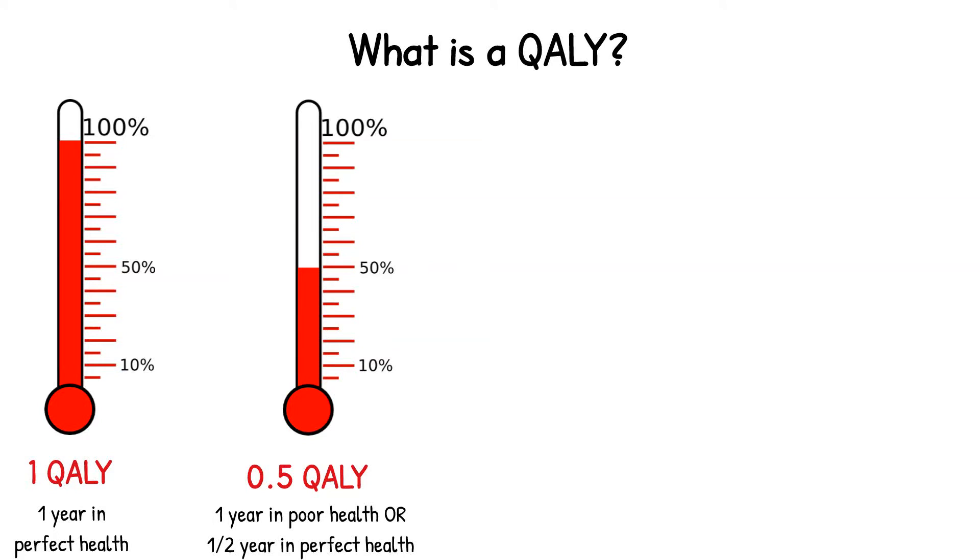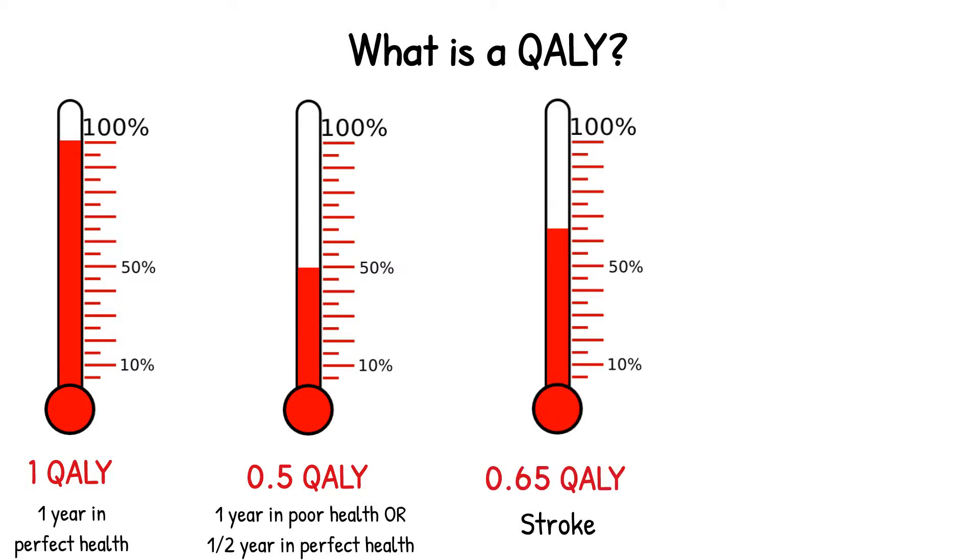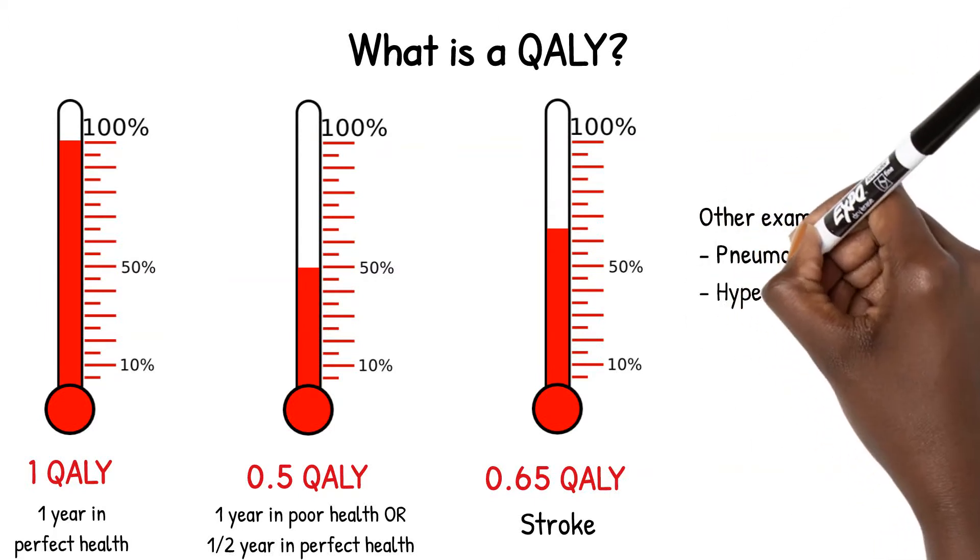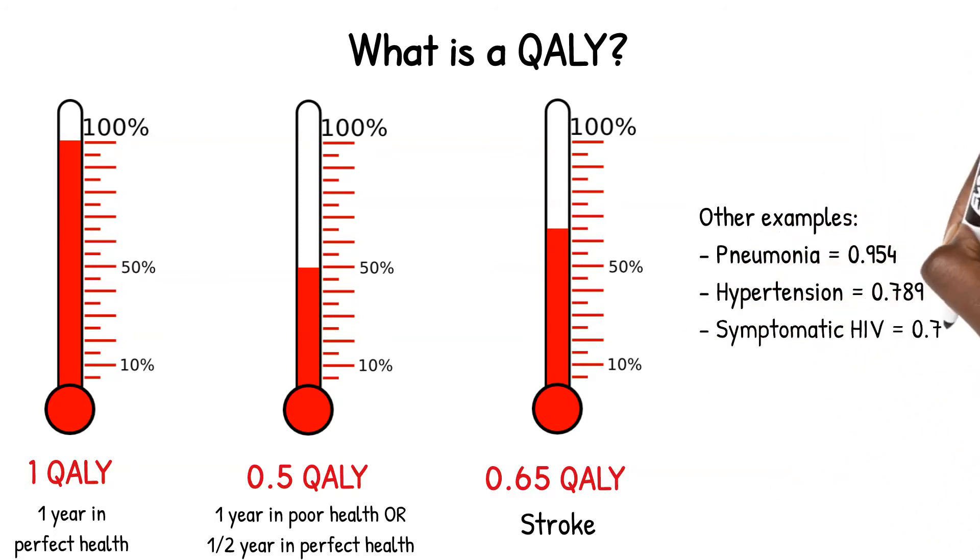What are some examples of other real-world QALYs that have been quantified? Stroke, for example, has a 0.65 QALY. There are complex methods, which we won't go into here, that have been used to calculate thousands of QALYs for pneumonia, hypertension, HIV, and many other health states, giving us a standardized currency around which we can discuss health utility or benefit.